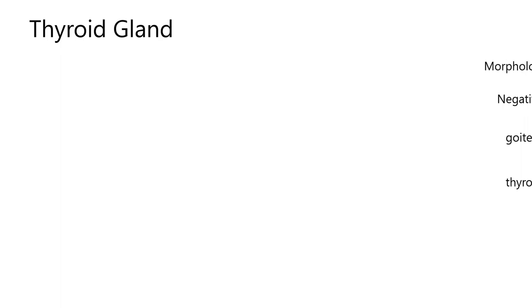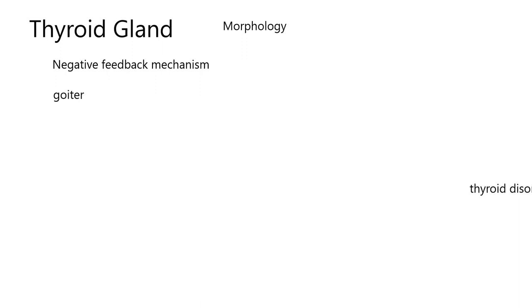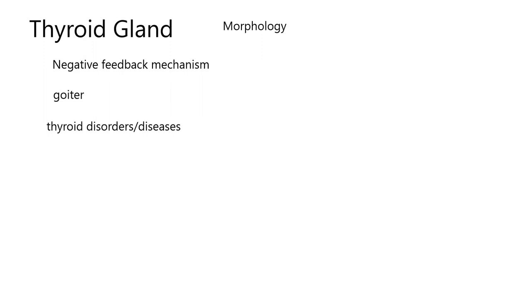Here we are. We're on the second part of the thyroid gland. Previously, we talked about the morphology, which basically means the study of the structure. We have three items to talk about: negative feedback mechanism, which basically keeps hormone levels in check; goiter, which means enlarged thyroid gland — it doesn't say why it's enlarged; and then a couple of discussions on thyroid disorders and diseases.